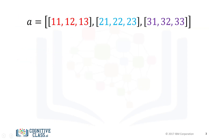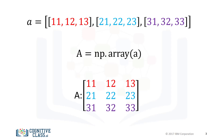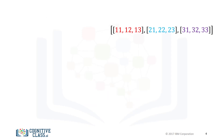Consider the list A. The list contains three nested lists, each of equal size. Each list is color-coded for simplicity. We can cast the list to a NumPy array as follows. It is helpful to visualize the NumPy array as a rectangular array. Each nested list corresponds to a different row of the matrix. We can use the attribute ndim to obtain the number of axes or dimensions, referred to as the rank. The term rank does not refer to the number of linearly independent columns like a matrix. It is useful to think of ndim as the number of nested lists.